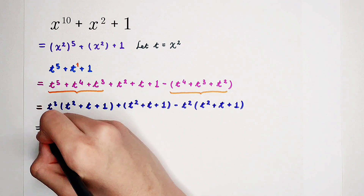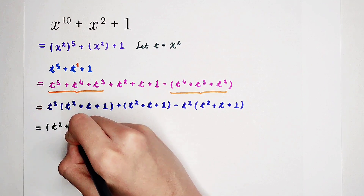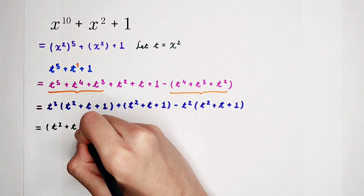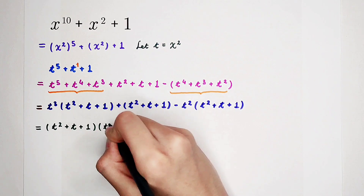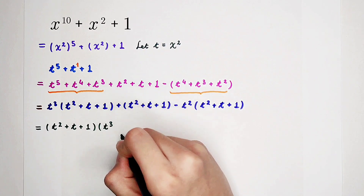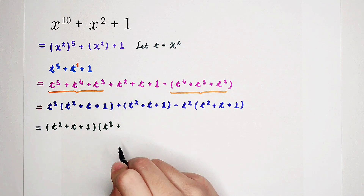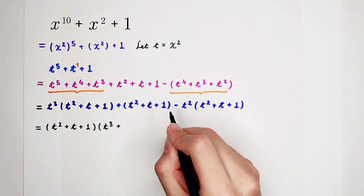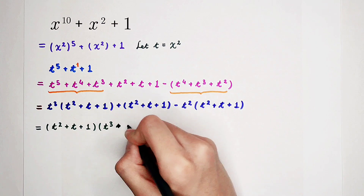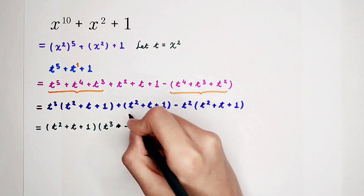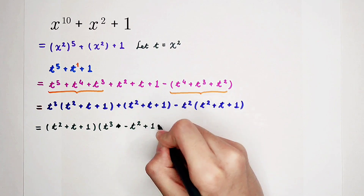So take it out: (t squared plus t plus 1), and then times (t cubed minus t squared plus 1). Both orderings are okay. But have we finished? No, of course not.